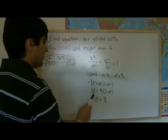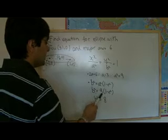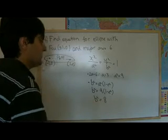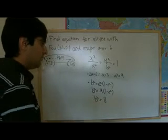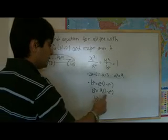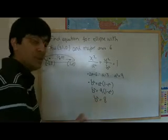If we substitute the values we found, we find b² is 9 times (1 - e²). Now, we've got two unknowns here. We've got b and we've got e². But we can find e.